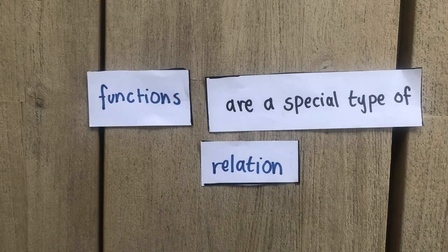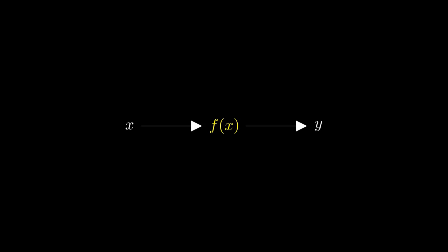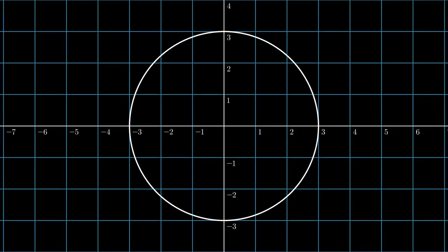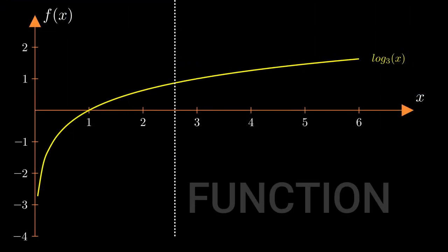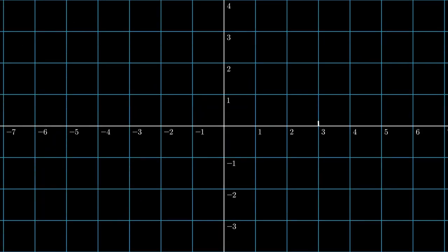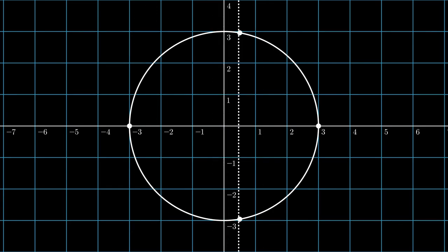Functions are a special type of relation. A relation is a way to relate points on a number line with each other. You can think of both relations and functions as machines where you give the machine some input and it produces an output. The only difference is that for any given input number, a relation can produce one or more output numbers. However, functions only produce one output number for any given input. For example, let's graph the relation x squared plus y squared equals 1. Notice how for each value of x, there are two output numbers on the graph. This visual test to distinguish between a relation and a function is referred to as the vertical line test.